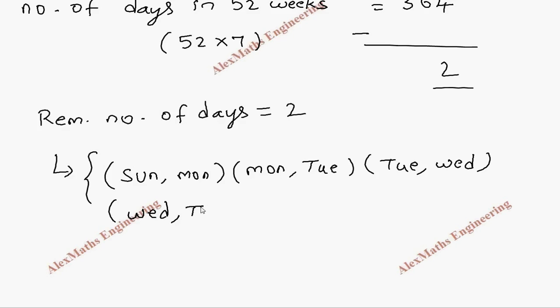Or it can be Wednesday Thursday, or it can be Thursday Friday, or it can be Friday Saturday, or Saturday Sunday. So these are the combinations possible.